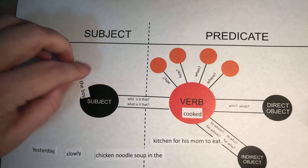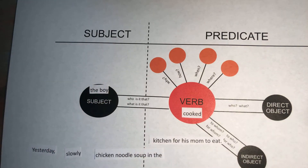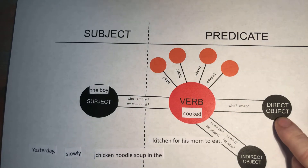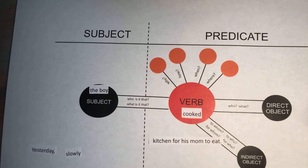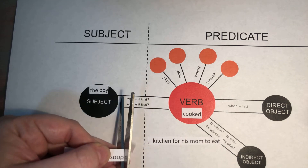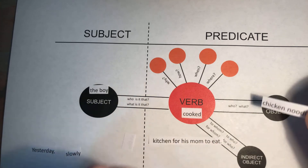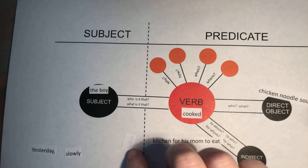Okay, so now we know the boy cooked. What did the boy cook? That is our direct object — he cooked chicken noodle soup. So let's cut out 'chicken noodle soup' because that is our direct object. He cooked chicken noodle soup.